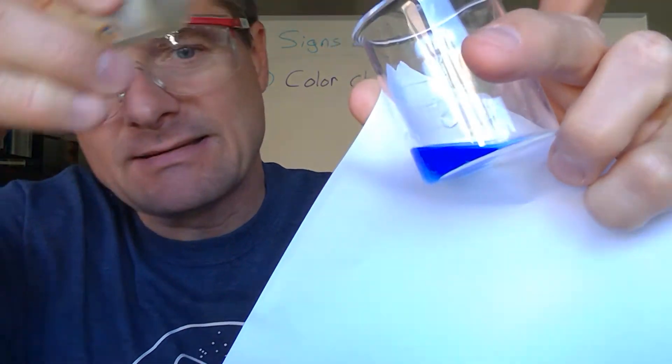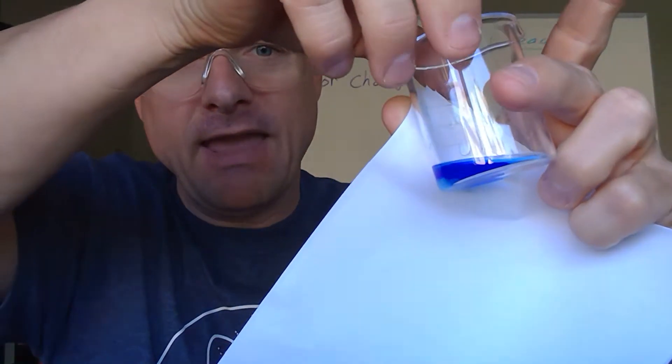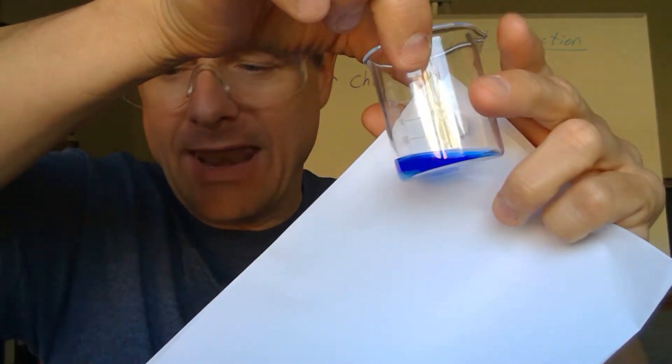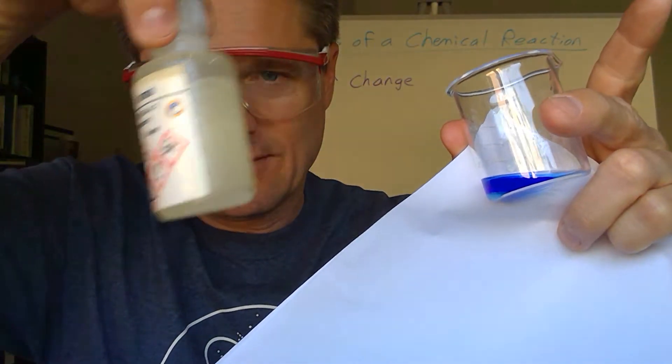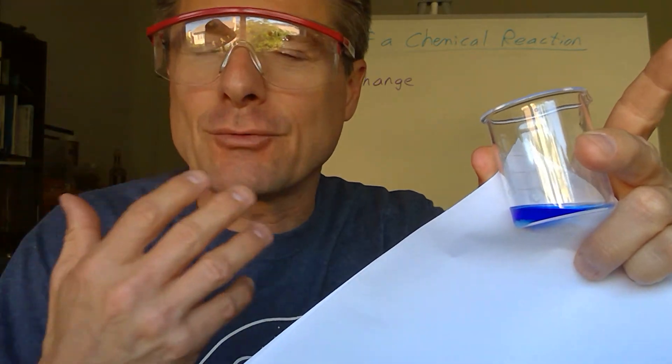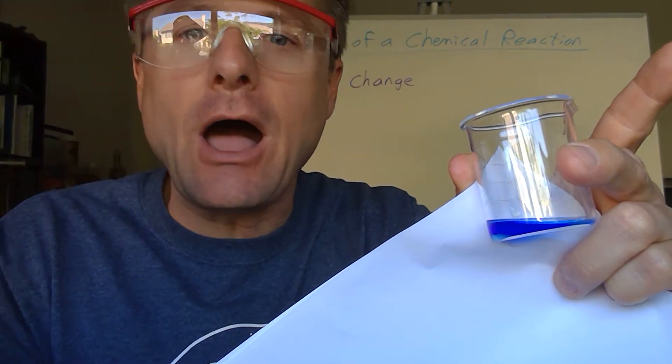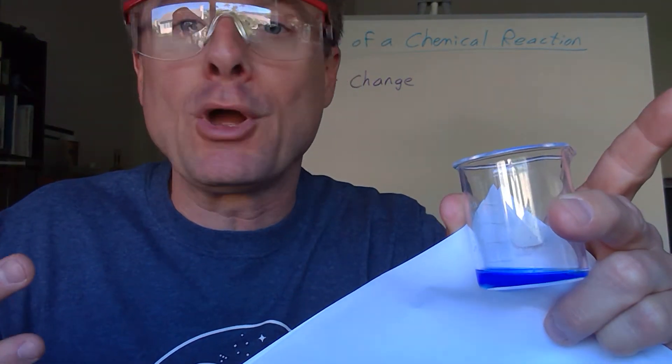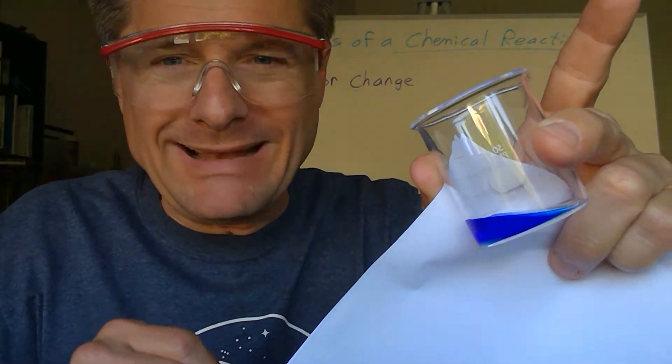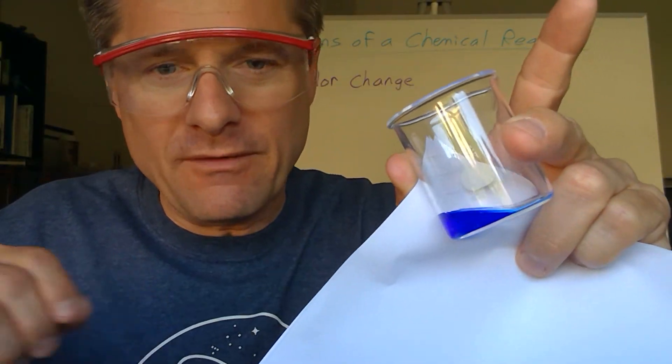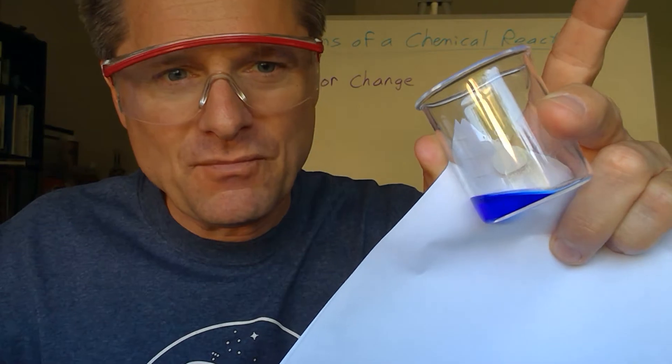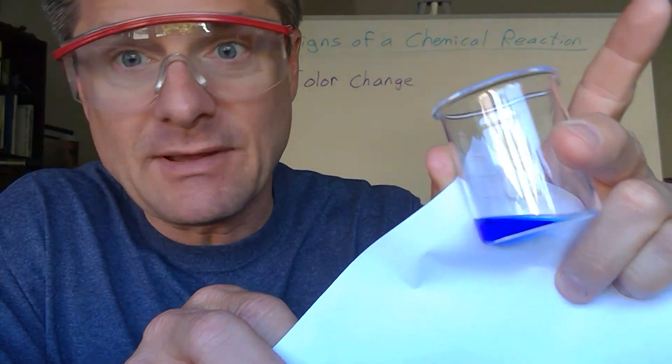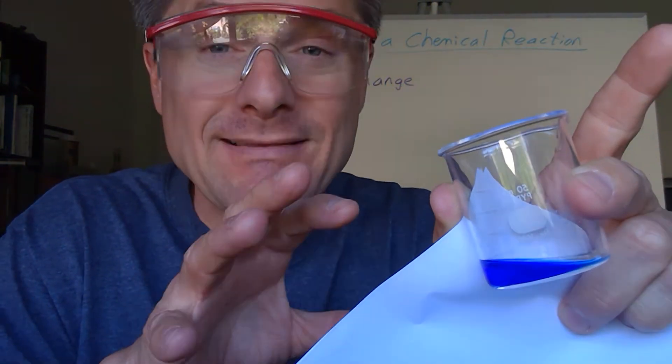Let's add some of this and see if we can see some kind of change. So pretty distinct, right? We have this kind of a faint blue and you'd expect if we added this clear colorless solution to it, it would dilute that blue color. But you wouldn't expect it to get darker. So we went from the very, very light blue color to a very, very dark blue color.